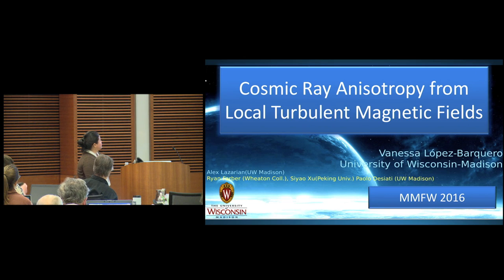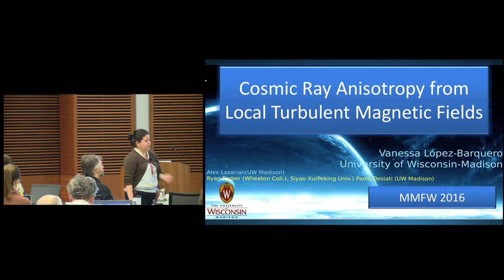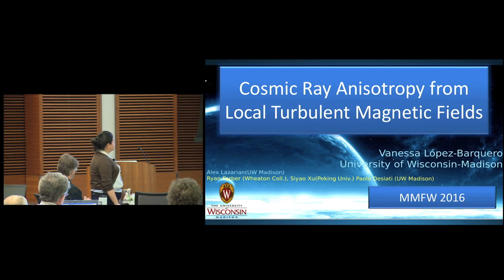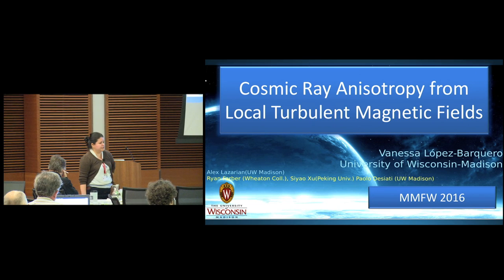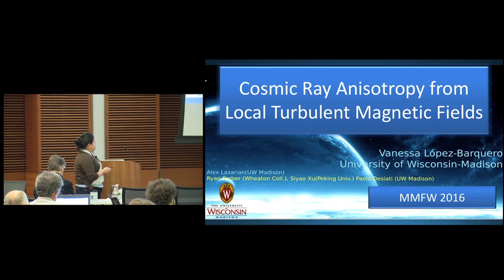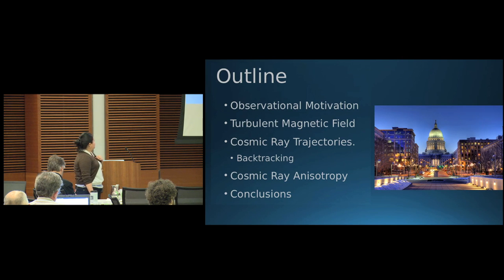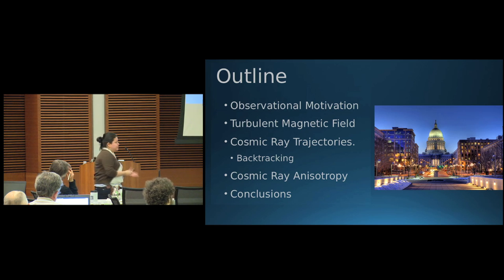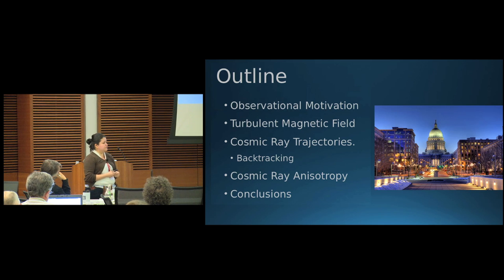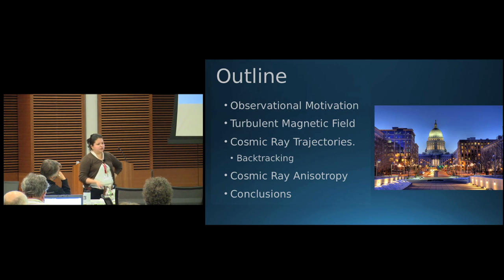Today I'm gonna be talking about cosmic ray anisotropy that arises from local turbulent magnetic field effects. This work was done here at the University of Wisconsin-Madison with my advisor Alex Lazarian and collaborators Ryan Farber from Wheaton College, Siyao Xu from Peking University, and Paolo Desiati from UW-Madison. The outline: first I'll talk about the observation and motivation, then my specific work — the turbulent magnetic field, the cosmic ray trajectories, and the backtracking method to get anisotropy — and finally results and conclusions.